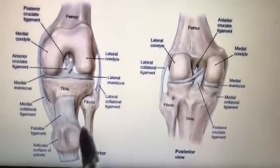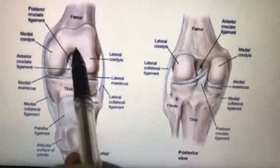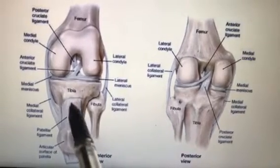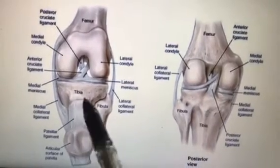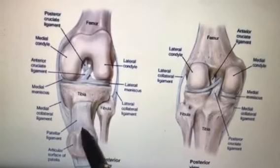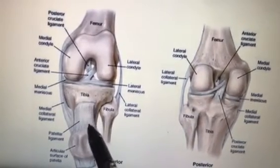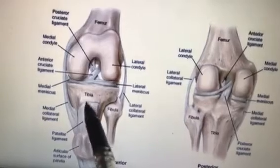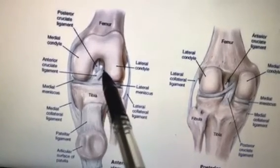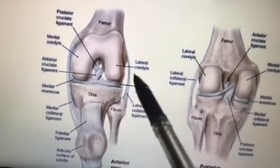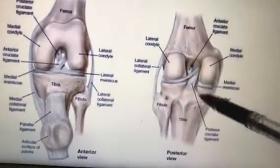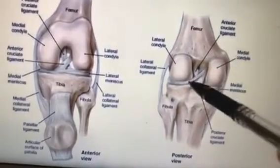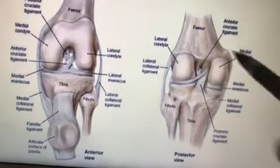Looking at the anterior aspect of the knee joint, the ligamentum patellae is reflected here. Tibial tuberosity is here, and the ligamentum patellae is attached from the apex of the patella to the tibial tuberosity. It is a continuation or degenerated part of the quadriceps tendon. You can also see the anterior cruciate ligament, the posterior cruciate ligament behind it, and the lateral and tibial collateral ligaments on both sides.